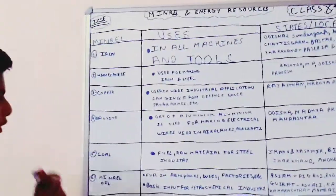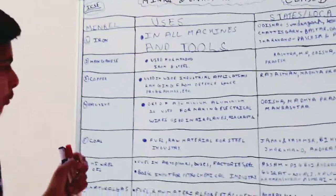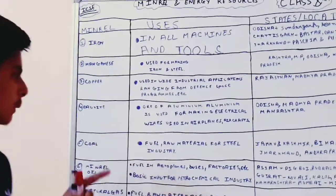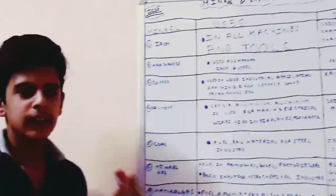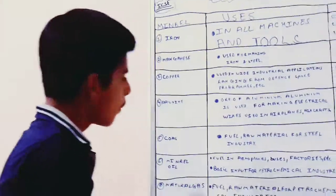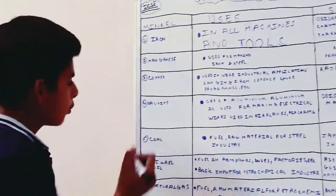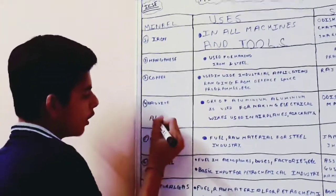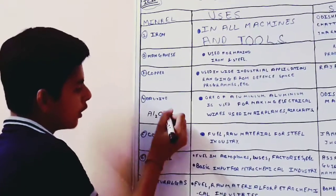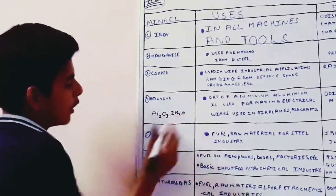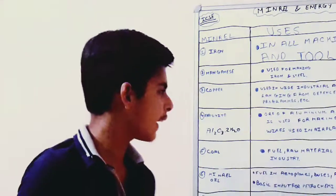Now bauxite. Bauxite is the ore of aluminum. Aluminum ka ore. And we have studied in chemistry, bauxite ka formula - formula of bauxite is Al2O3.2H2O. This is the formula in chemistry of bauxite.